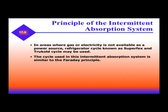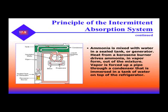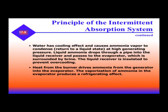The intermittent absorption system is used in areas where gas or electricity is not available. A power source or refrigeration cycle known as Superfex and truck-hold may be used. This cycle, used in intermittent absorption systems, is similar to the Faraday principle. Ammonia is mixed with water in a sealed tank or generator. Heat from a kerosene burner drives ammonia in vapor form out of the mixture. Vapor is forced up the pipe through a condenser immersed in a tank of water on top of the refrigerator. At high generating pressure, liquid ammonia drops through the pipe into the receiver and passes to the evaporator, which is surrounded by brine.